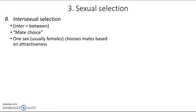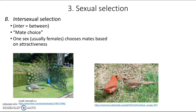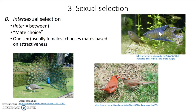The second type is intersexual selection — 'inter' meaning between — also known as mate choice. This is when one sex, usually the females, is choosy and selects mates based on attractiveness. Attractiveness can include bright colors, decorative features, or even singing songs or performing dances. The classic example is the peacock: males with the biggest tails and the most eye spots get to mate with the most females. In cardinals, females prefer the reddest males, and in paradise fish, females prefer males with big fancy fins, bright colors, and stripes.